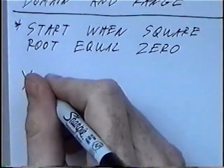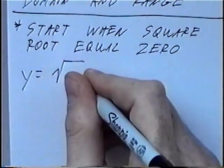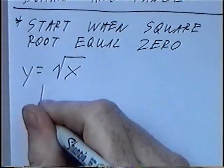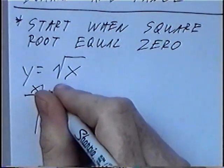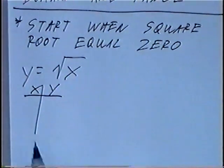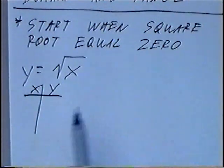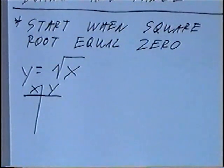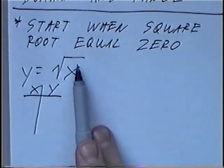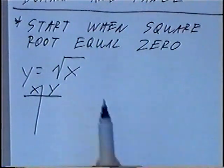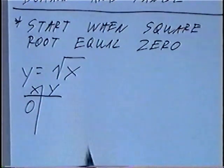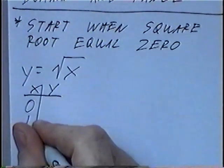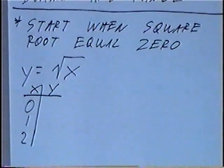The first function to graph is y equals the square root of x. To graph this we can use a t-table. The best approach, looking back at the definition, is to start the table where the square root is equal to zero. If we have a single x inside the square root, that means the square root equals zero when x is equal to zero. We can do a couple of numbers past that to get the graph for the function.